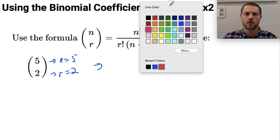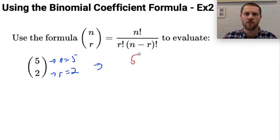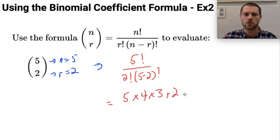So this is going to be 5 factorial over 2 factorial times 5 minus 2 factorial, which is going to equal 5 times 4 times 3 times 2 times 1 over 2 times 1 times 5 minus 2 factorial is 3 factorial.